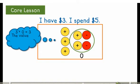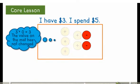When I add the zero pairs to the mat, the value on the mat has not changed. Now I'm able to spend my $5, and I'm left with 2 red chips. 3 minus 5 equals negative 2. Because I have spent more than I had, I am now $2 in debt.